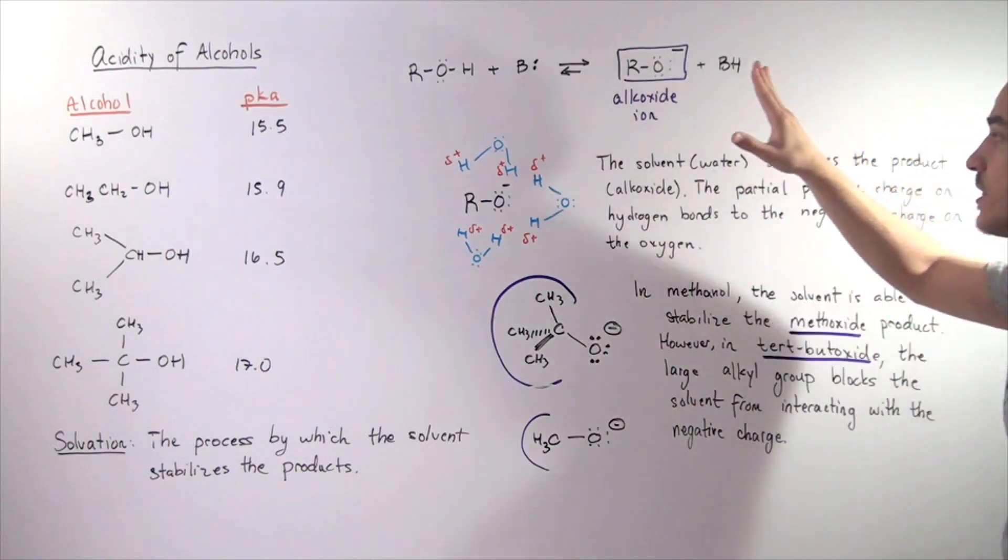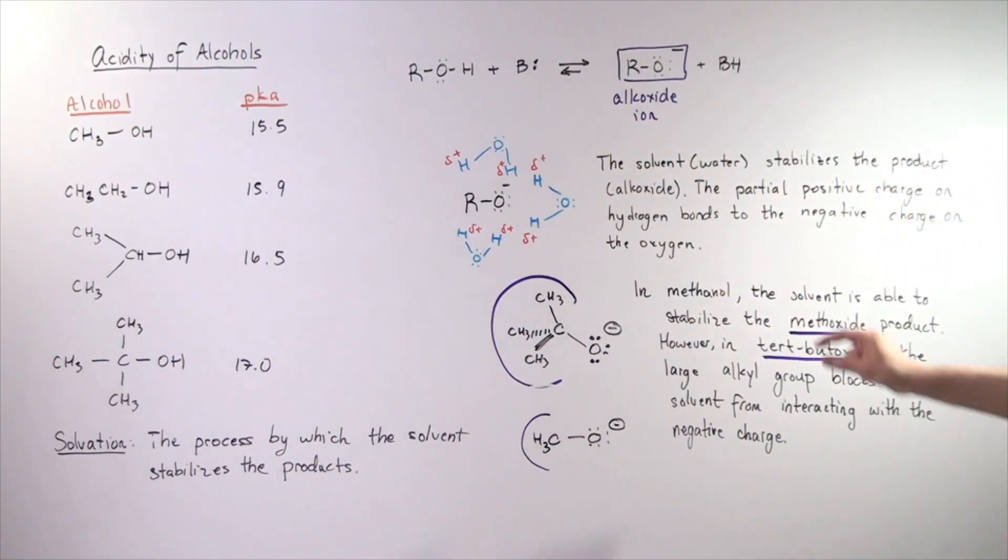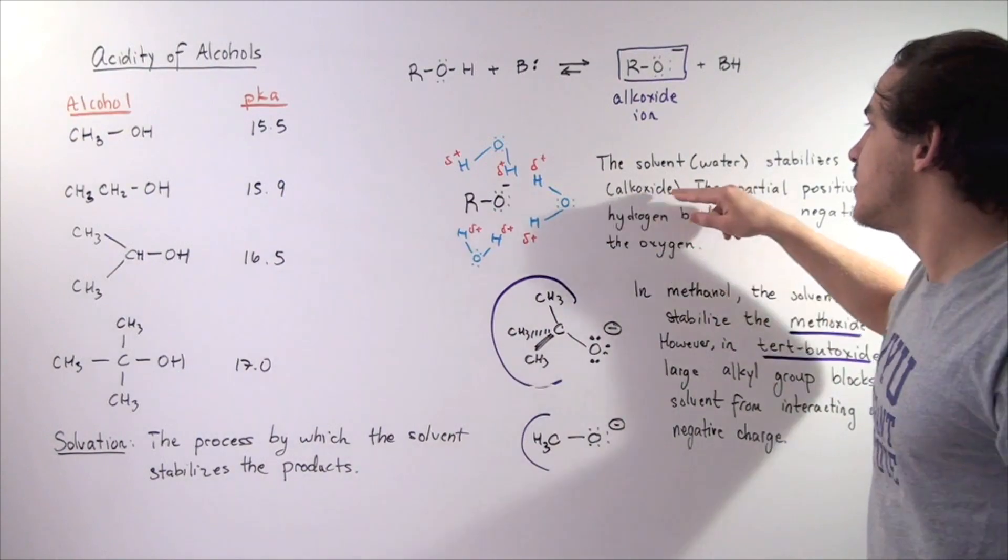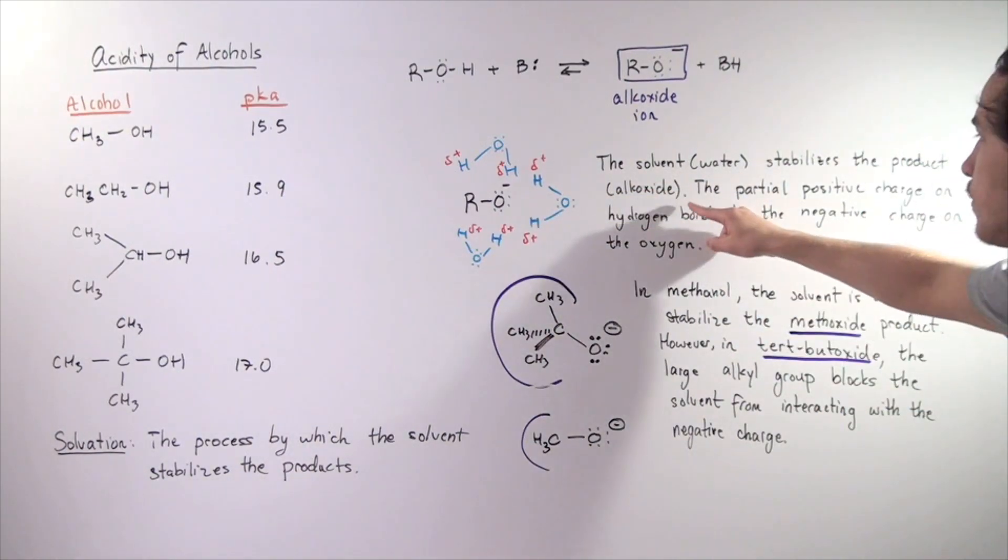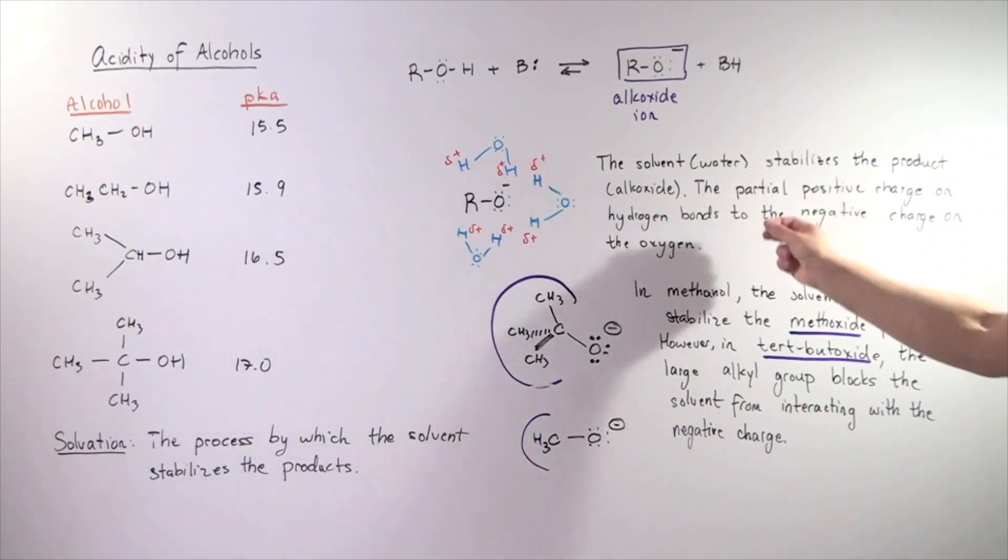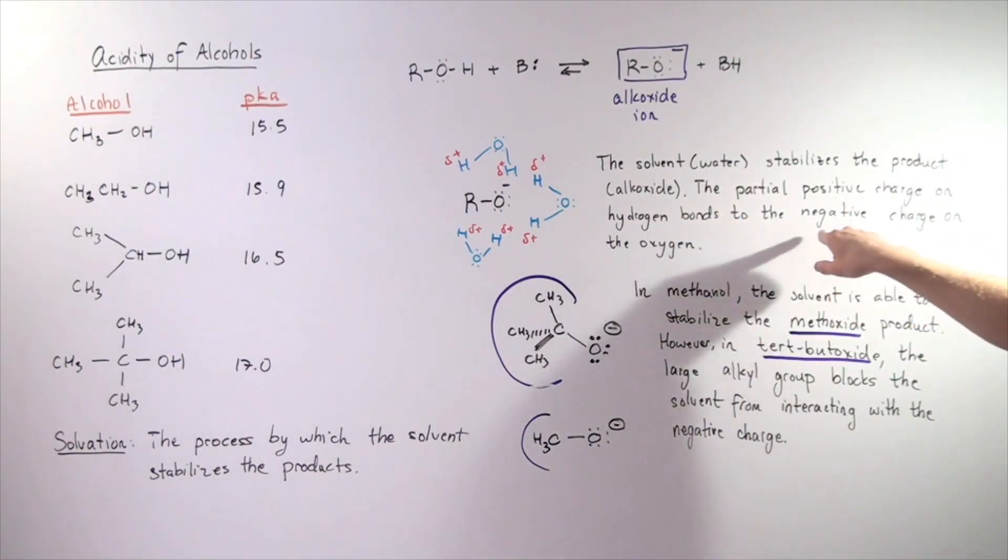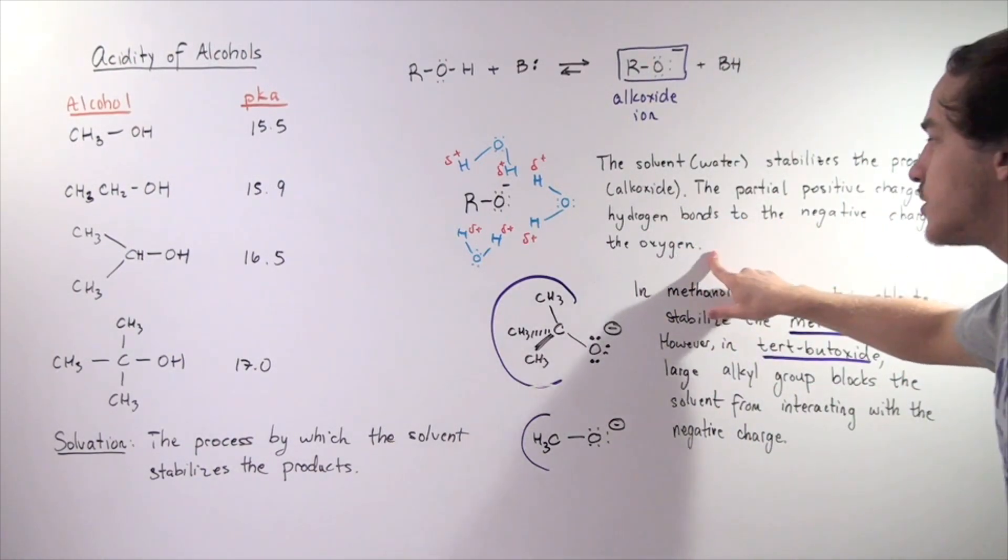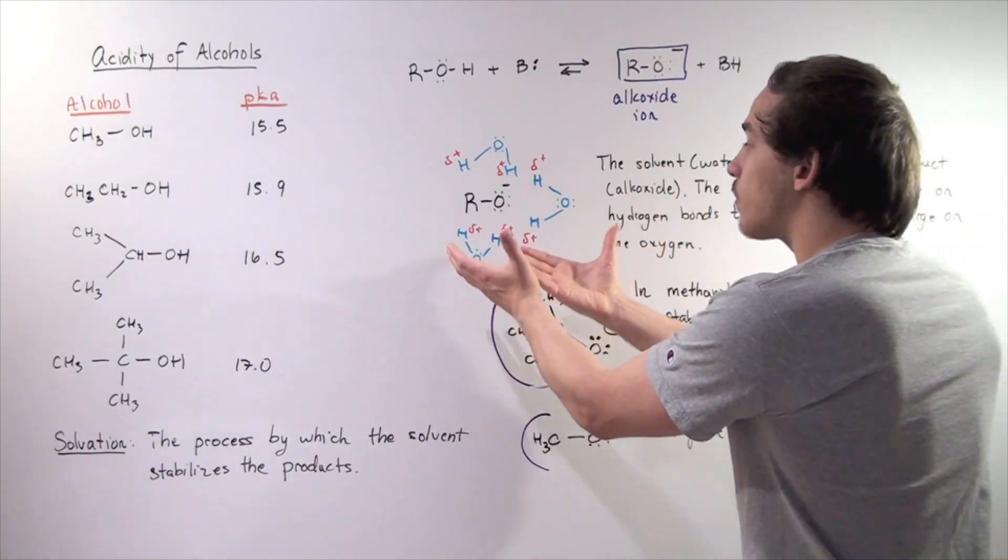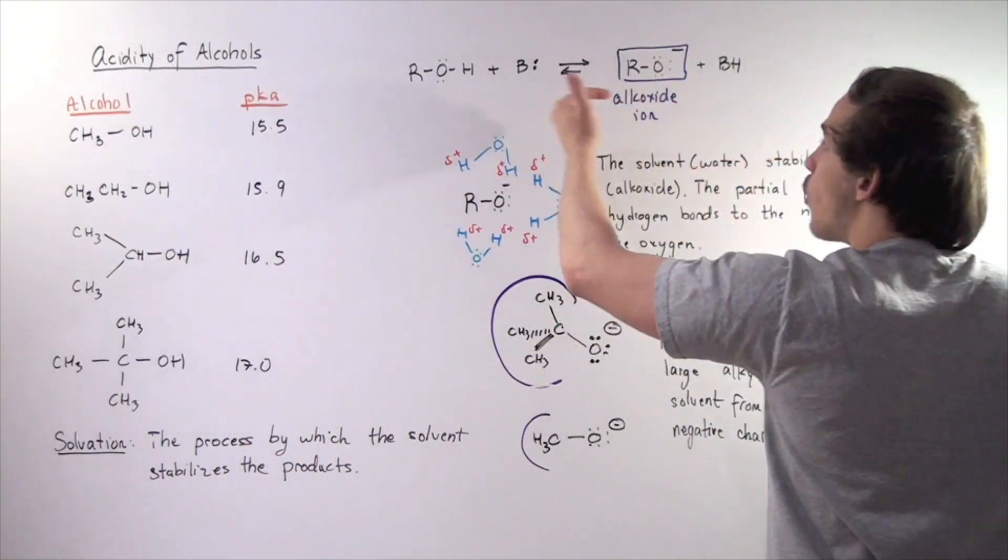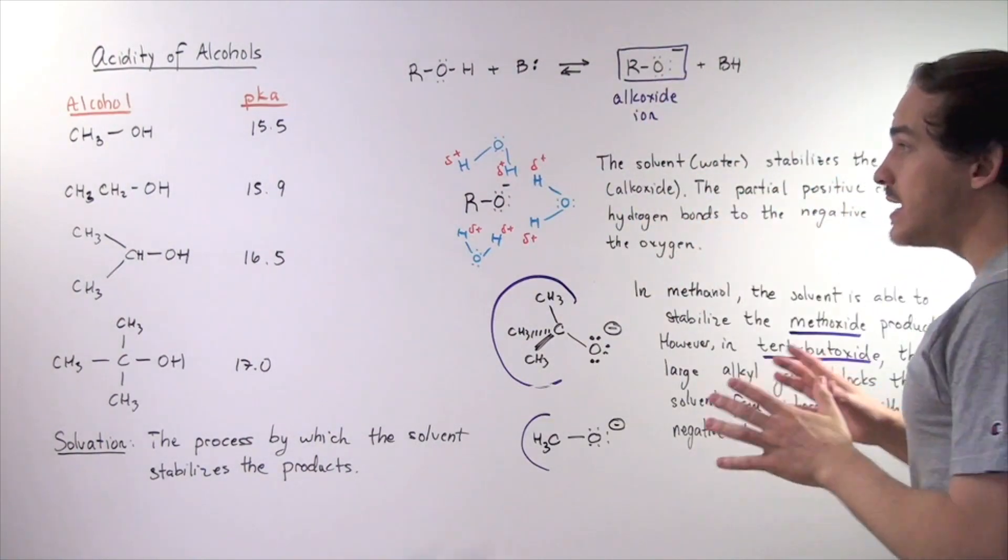So once again, the solvent, in our case water, stabilizes the product, in our case the alkoxide ion. The partial positive charge on the H atoms bonds to the negative charge on the oxygen, and this stabilizes our product and makes our reaction more product-favored.